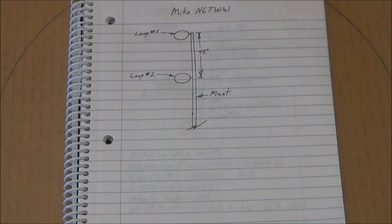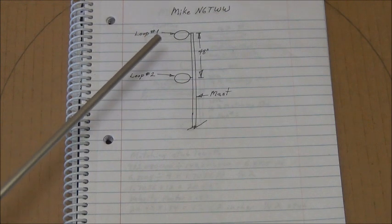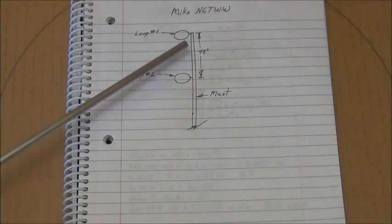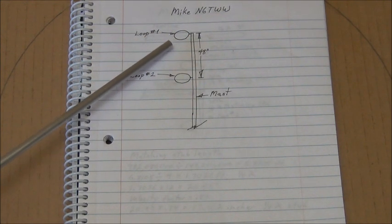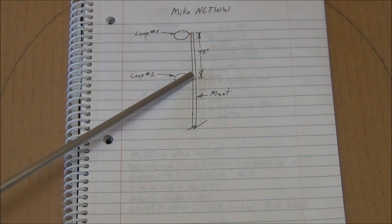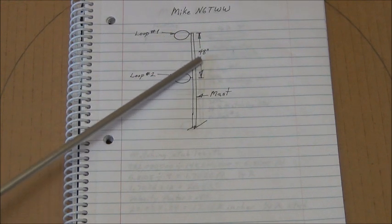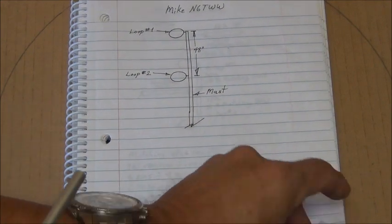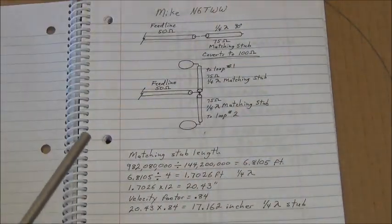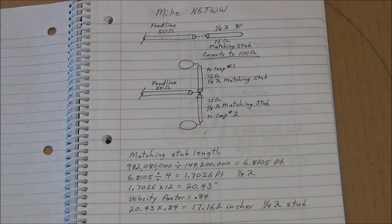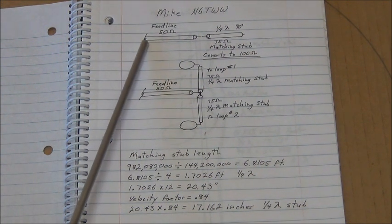Next I'm going to show you the overall goal of these antennas. I'm going to have my two loops and I'm going to have the phasing harness between the two. My goal is to have the two loops approximately four feet apart, so loop one, loop two, here's the mast.